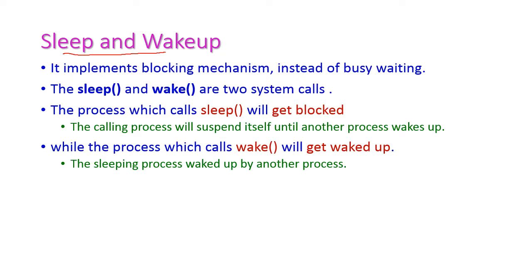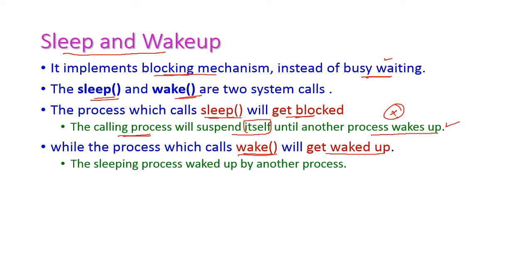In the critical section, sleep and wake-up implements the blocking mechanism instead of busy waiting. In sleep and wake-up there are two system calls: the first one is sleep and the second one is wake. If any process calls sleep, it will get blocked — the calling process will suspend itself until another process wakes it up. When a process calls wake, the sleeping process will get waked up by another process, not by itself. Once a process goes to sleep mode, some other process must come and wake it up.